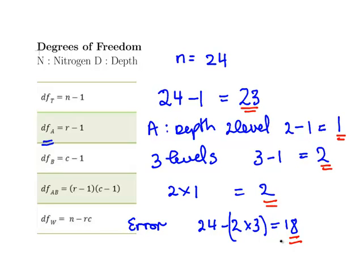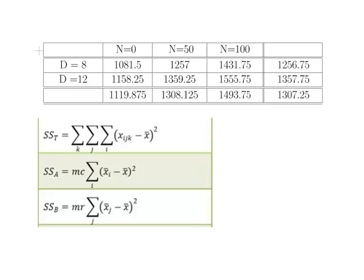There is a little exercise based on this, but I want to demonstrate where all the values come from, from first principles. I won't get time to do them all, but that is the point of the exercise. Now what we are going to do is compute sums of squares. I am not going to compute total sums of squares — I am going to compute the sums of squares for depth and sums of squares for nitrogen.